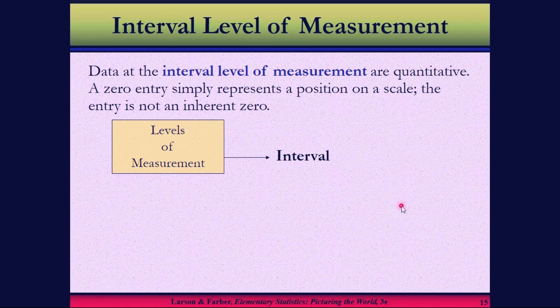The third level of measurement is interval level of measurement. Data at the interval level of measurement are quantitative. A zero entry simply represents a position on a scale; the entry is not an inherent zero. The interval level is arranged in order, and the differences between data entries can be calculated.